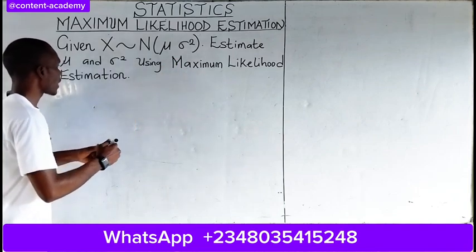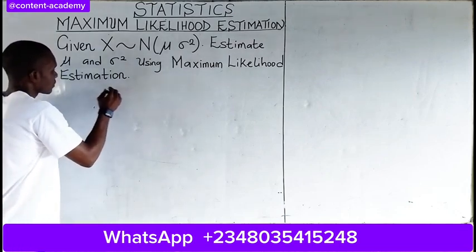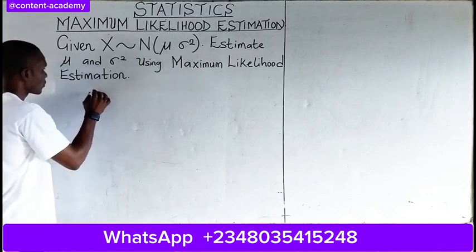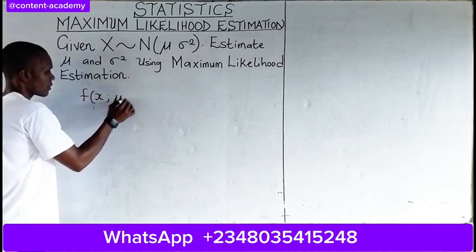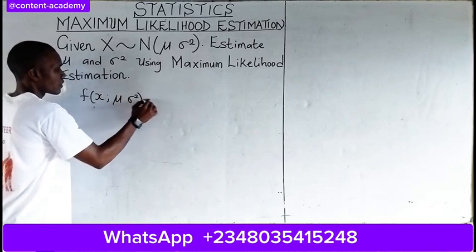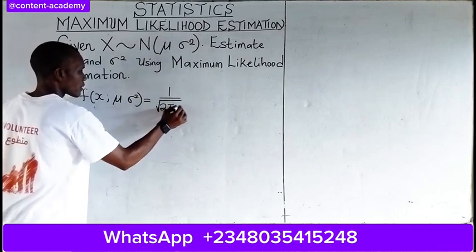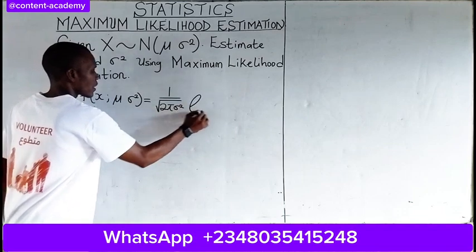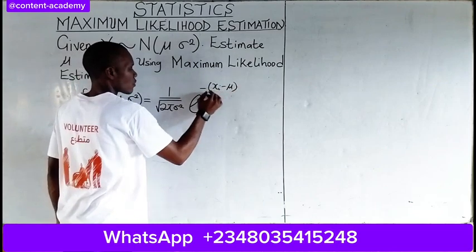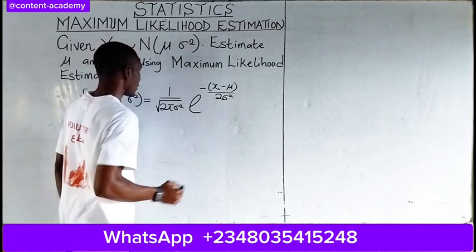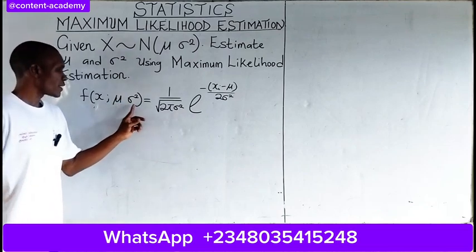This question has really been a challenge for students, so let us write out the normal distribution first. The normal distribution is defined as f(x; mu, sigma squared) = 1 over the square root of 2 pi sigma squared, times the exponential of negative (x_i minus mu) squared all over 2 sigma squared.